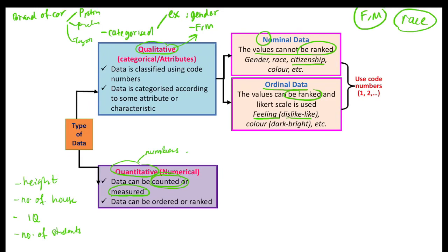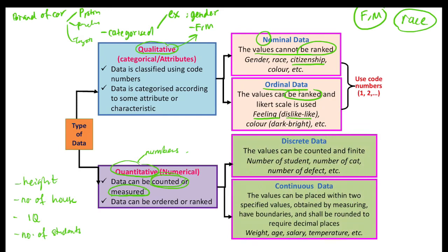For quantitative data, it can also be divided into two: discrete data and continuous data. Discrete data is values that can be counted and are finite — counted one by one. For example: number of students, number of cats, number of defects, number of houses, number of people, number of computers, number of COVID-19 cases, number of laptops, number of faculties. These do not have decimal points — that is discrete data.